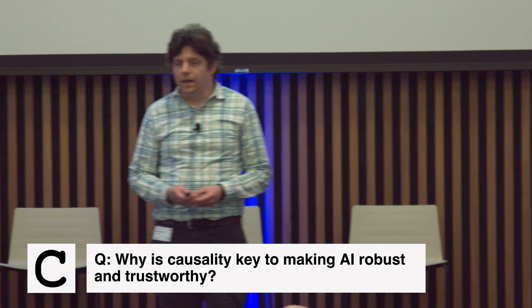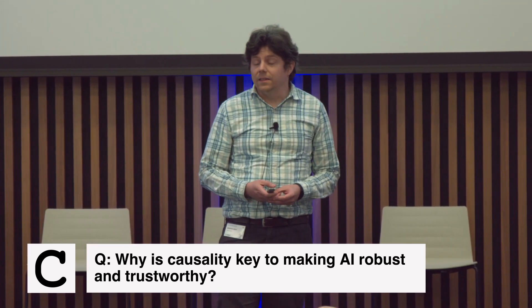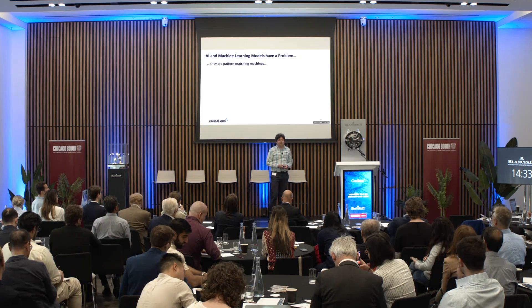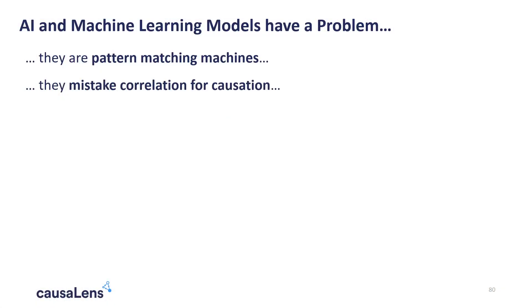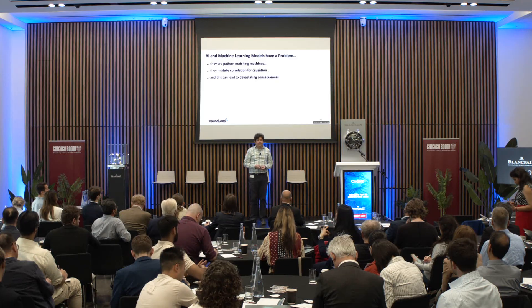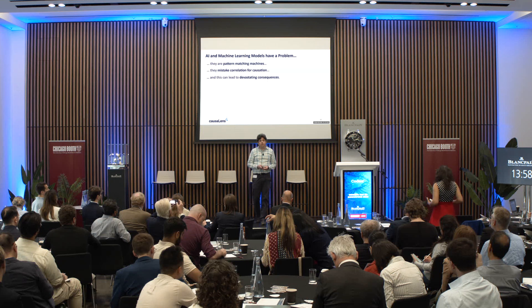There's a big problem right now with machine learning and AI. These machines are essentially pattern matching engines — they look for patterns in the data and associate outcomes with patterns. The problem is that they mistake correlation for causation. The fact that a pattern occurs at the same time as an outcome does not imply that the outcome was caused by that pattern. This is a challenge for humans and for machine learning models alike, and it can lead to devastating consequences when you deploy these models in the real world.